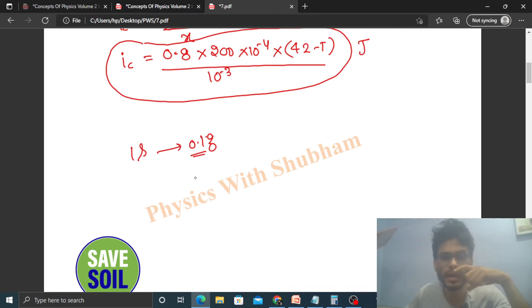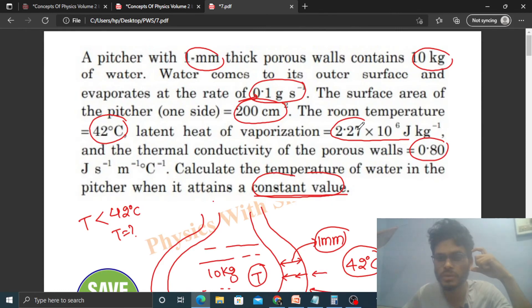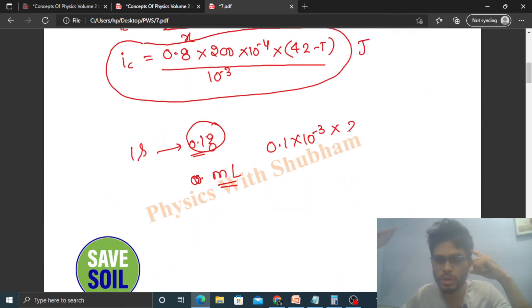How much heat is required for 0.1 gram water to evaporate? That is mass into latent heat of vaporization. Mass is 0.1 gram, that is 0.1 into 10 raise to the power minus 3 kilogram, and latent heat of vaporization is given in the question as 2.27 into 10 raise to the power 6. So 2.27 into 10 raise to the power 6 joules per second.